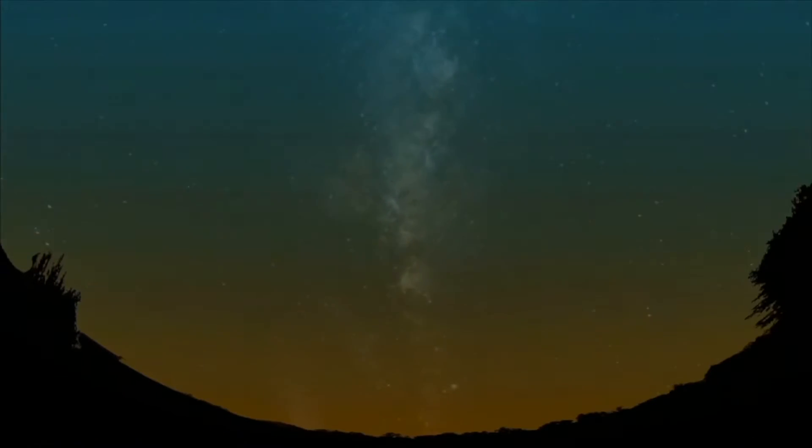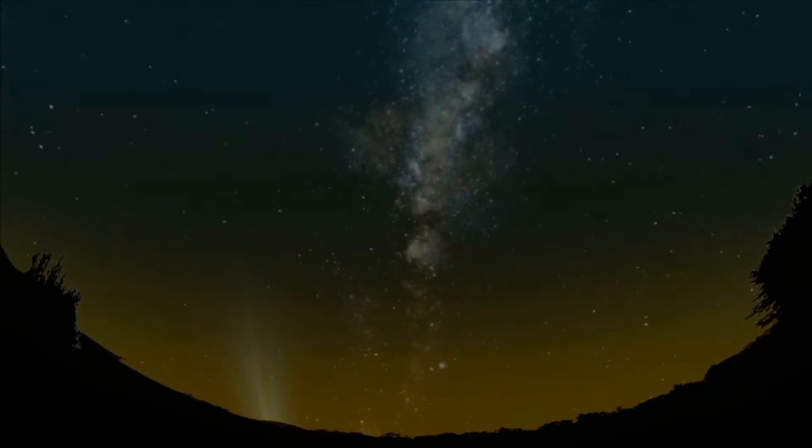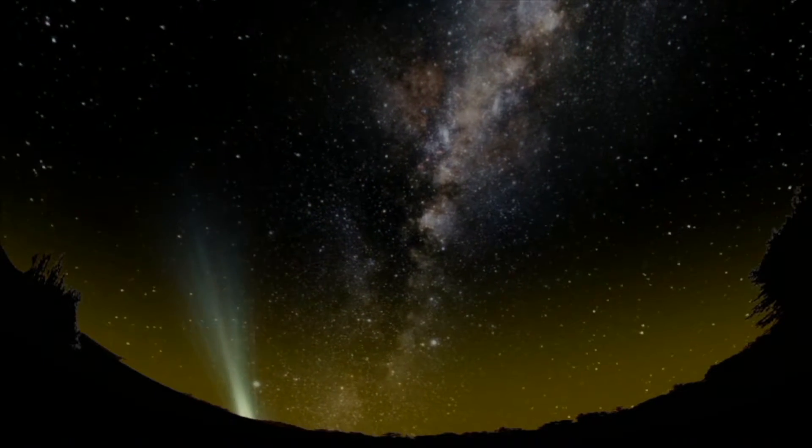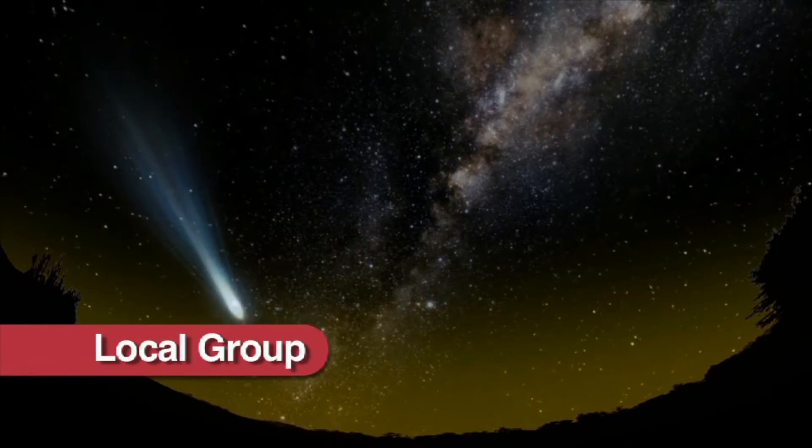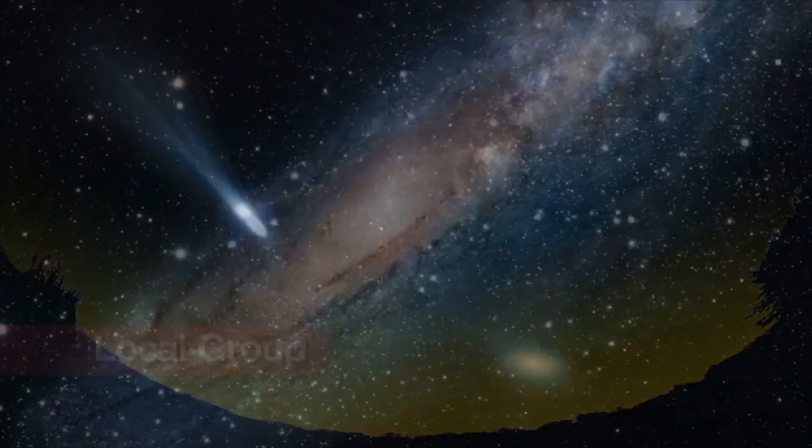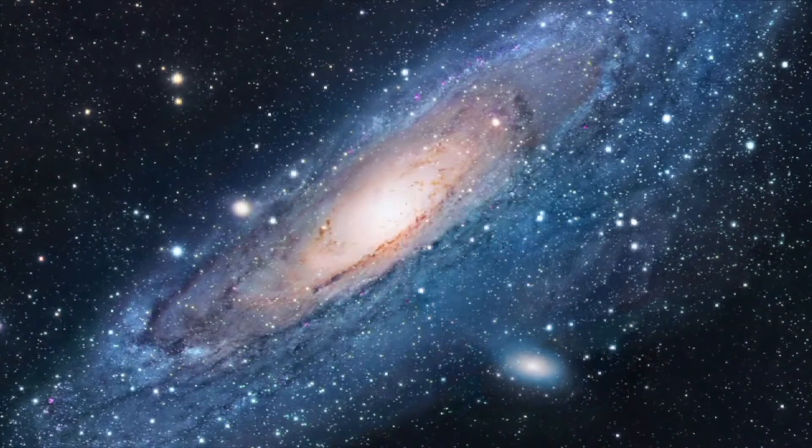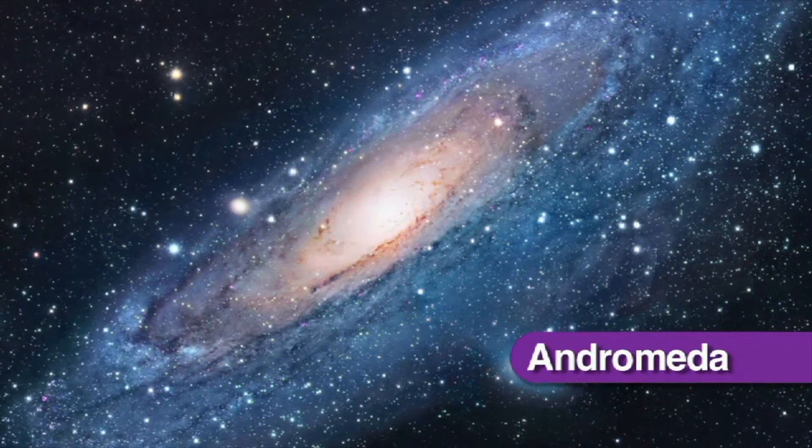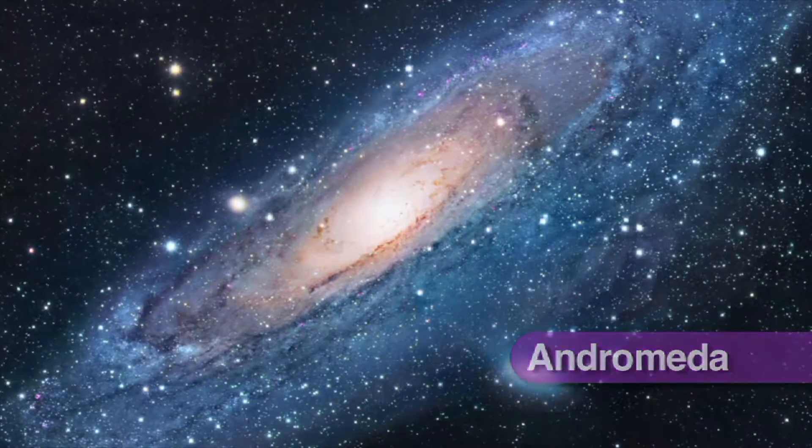The Milky Way is part of a cluster of around 3,000 galaxies called the Local Group. The closest galaxy to the Milky Way is Andromeda, which is 2.6 million light-years away from us.